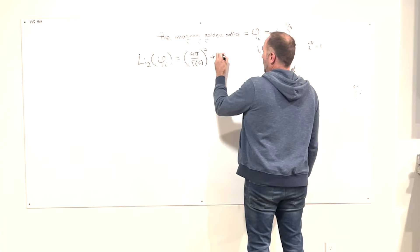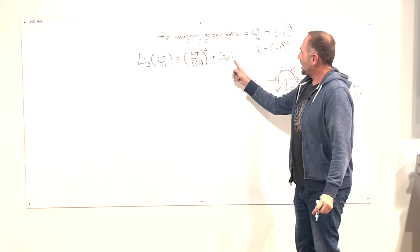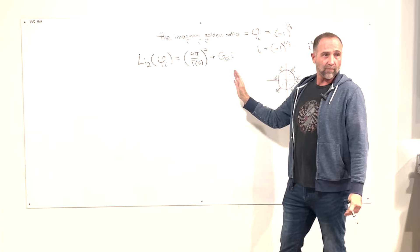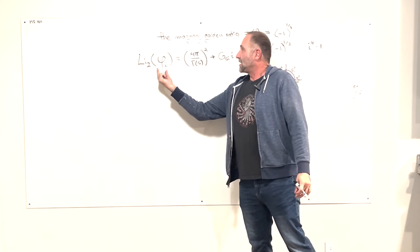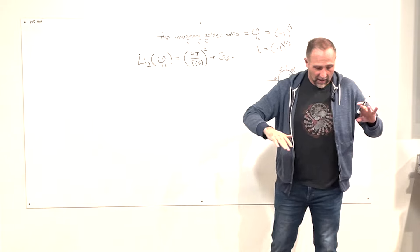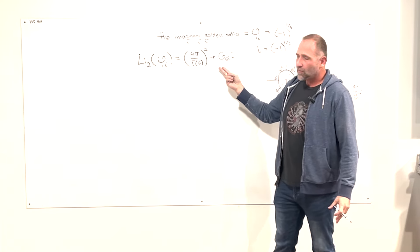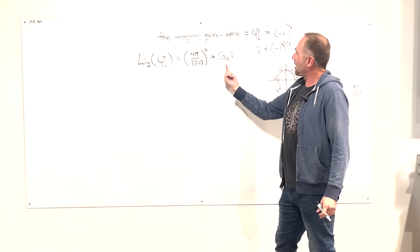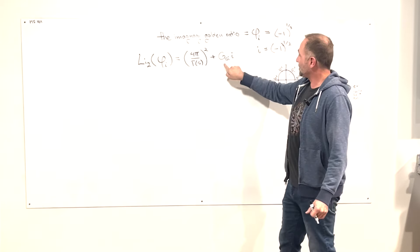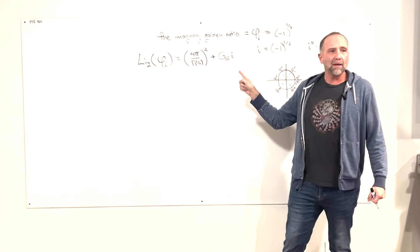The imaginary part is the Gieseking constant times i. This is the imaginary part of the dilogarithmic construction. The imaginary component is nothing but the Gieseking manifold itself — the constant that alerts you to having the Gieseking manifold. So the imaginary part of this construction is the minimal manifold.